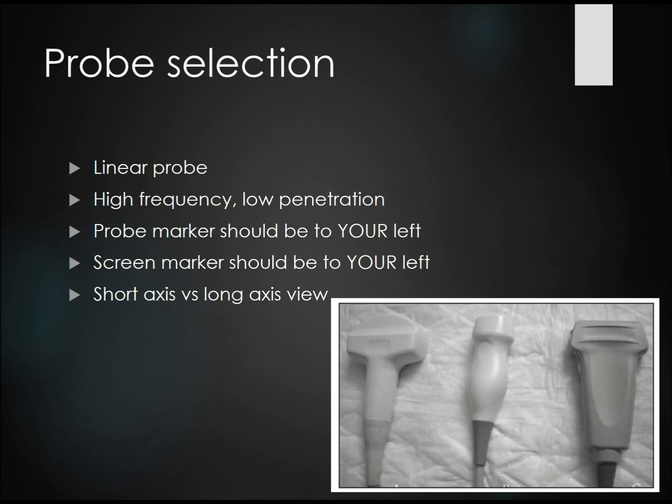For probe selection, most ultrasound-guided procedures use a linear probe. It's high frequency, so it lets you see structures at better resolution, but it has a low depth of penetration, so you can't see very far into the tissue. For most procedures, the probe marker should be on your left, and the screen marker should also be on your left. We'll talk later about short axis versus long axis view.